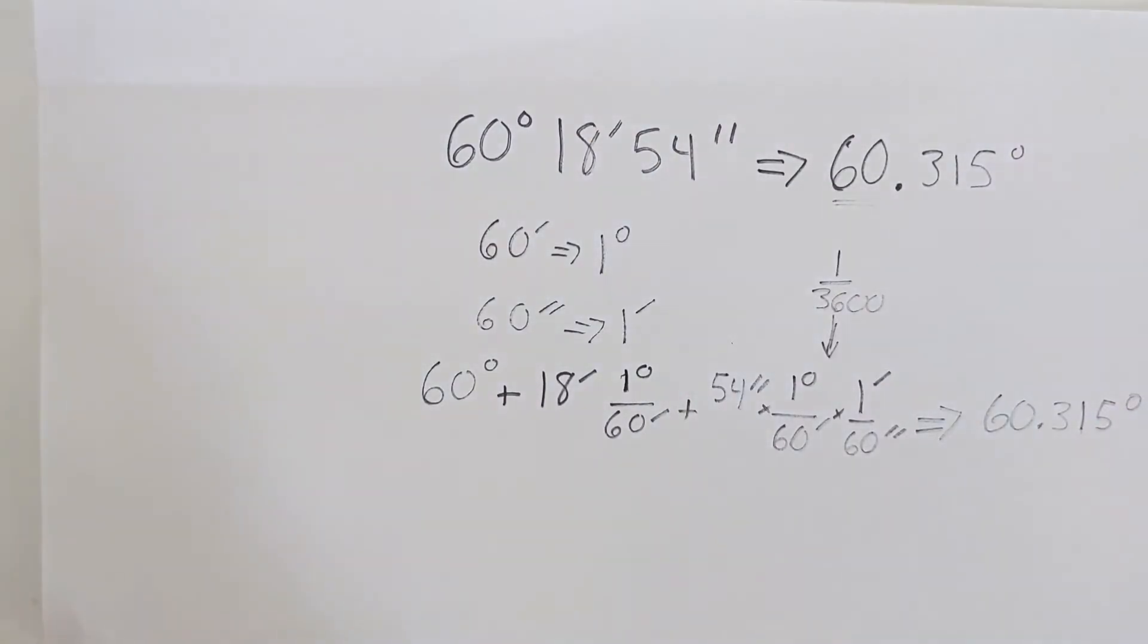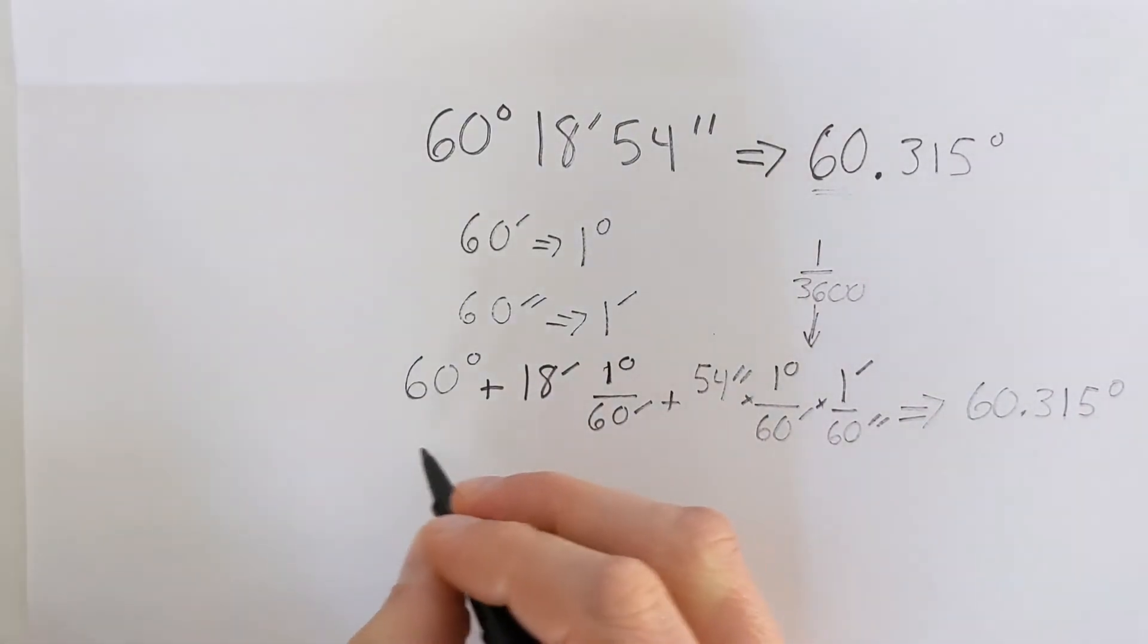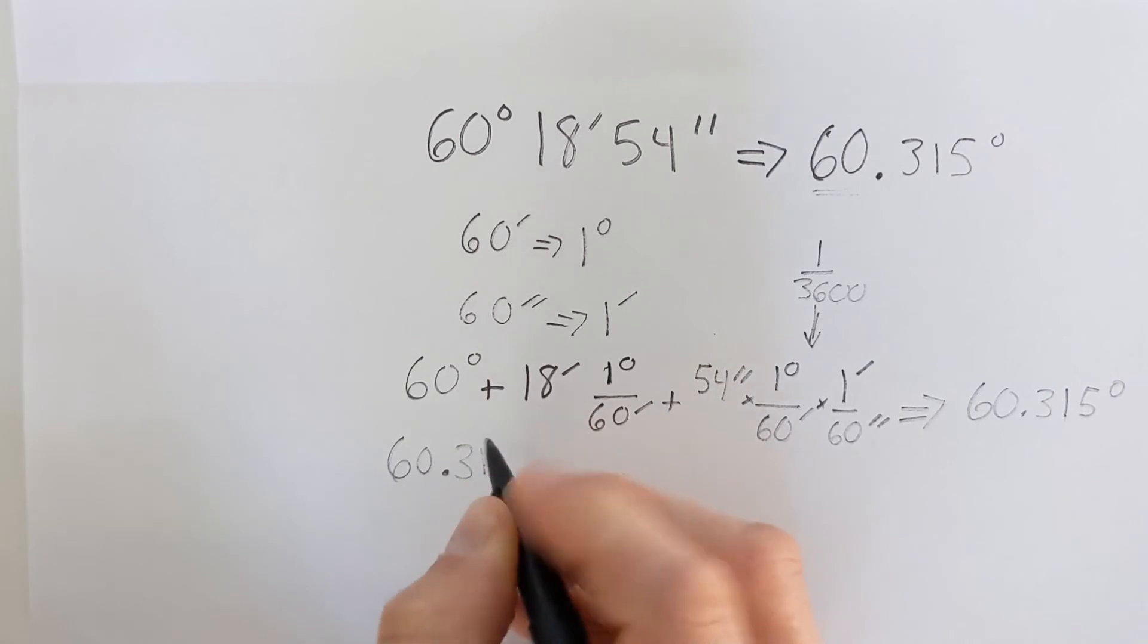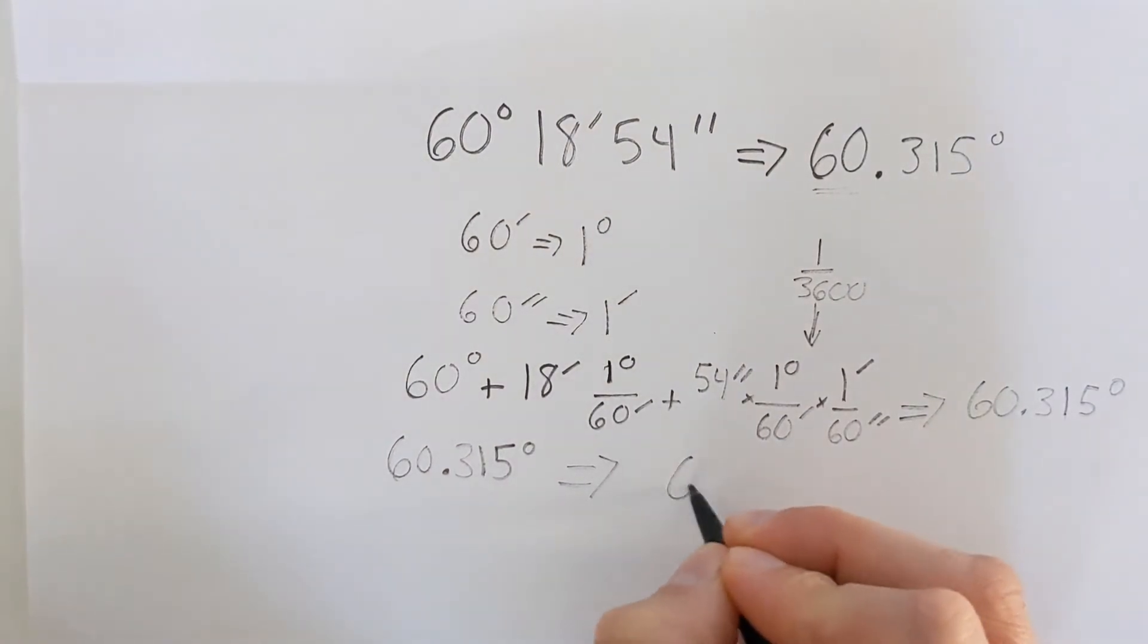Now the reverse is a little bit more difficult, but we can do that as well. So if we are given decimal degrees, 60.315, and we're trying to convert this into degrees, minutes, and seconds, we know we're going to start with the 60 because that's our whole number there. So we have 60 degrees. Now we're going to have 0.315 degrees left over.